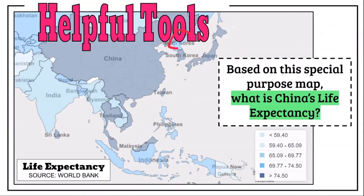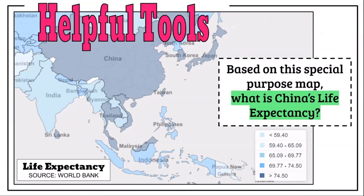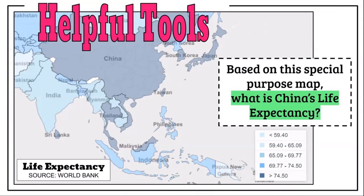But then you can look at the outliers — North Korea and Mongolia — and ask why they're outliers in East Asia. If you know about North Korea's politics and Kim Jong-un, you can analyze why life expectancy is lower there. If you look at a physical map alongside this one, you'll notice there's a huge desert in Mongolia — it's landlocked, a high desert, incredibly cold and dry, harder to grow things, and isolated politically because of its physical geography. That might contribute to its life expectancy.